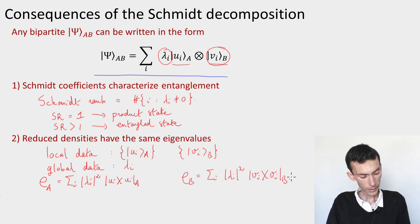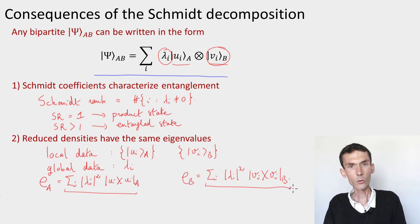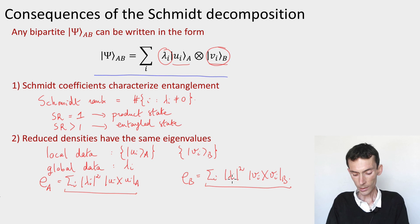One is that the two reduced density matrices here have the same lambda i squared as their singular values, right? So this is the SVD for rho A because the uis are a basis. This is the SVD for rho B because the vis are a basis. These lambda i squareds are the singular values.